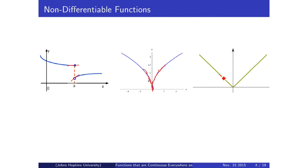The third one is arguably the worst — that's the absolute value function. If you draw in the tangent line right before and right after the point of non-differentiability, you get two lines that clearly do not converge onto the same line. Therefore the difference between the slopes will be a positive value, and therefore it is non-differentiable. And that is the function we're actually going to be focusing on for a while.